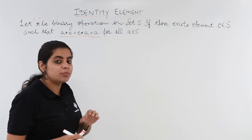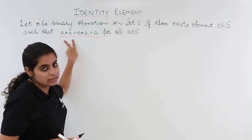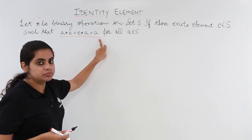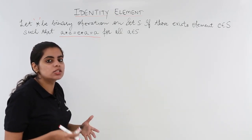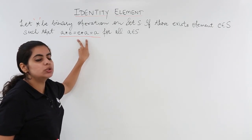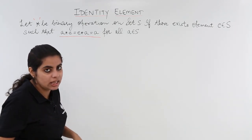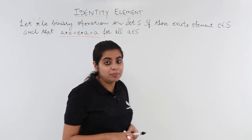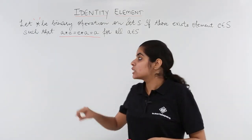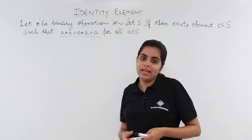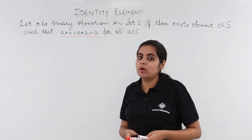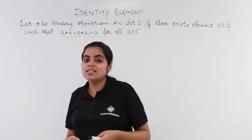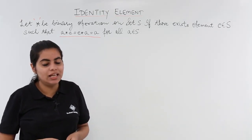That means suppose a binary operation is applied between a and e which results in a, and the order does not matter. If I apply the same binary operation to first e then a, then also I get a. That means no change happens on application of small e with a. That means we are talking about the identity element e. Now let's see some examples to understand this concept of identity element better.